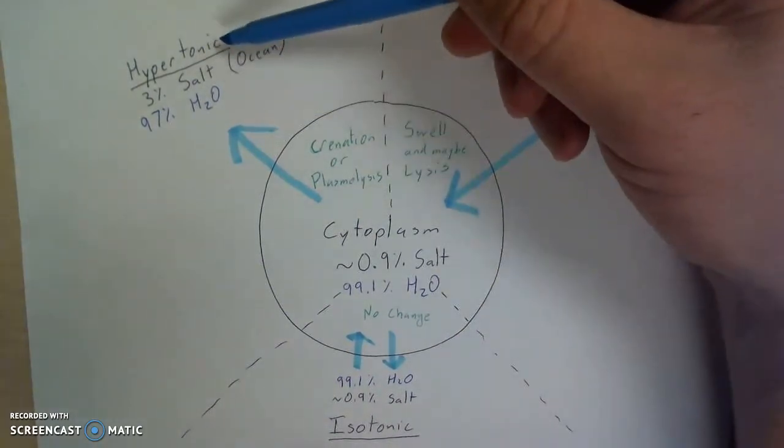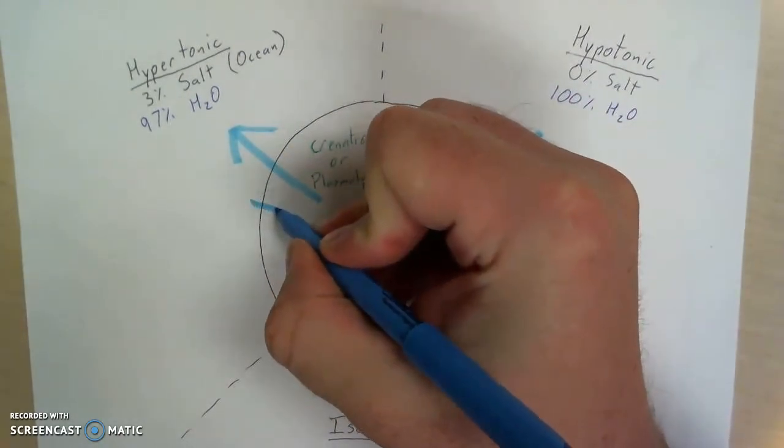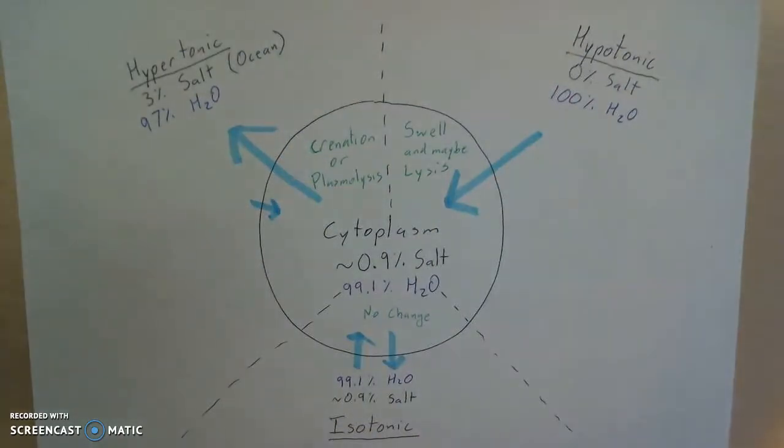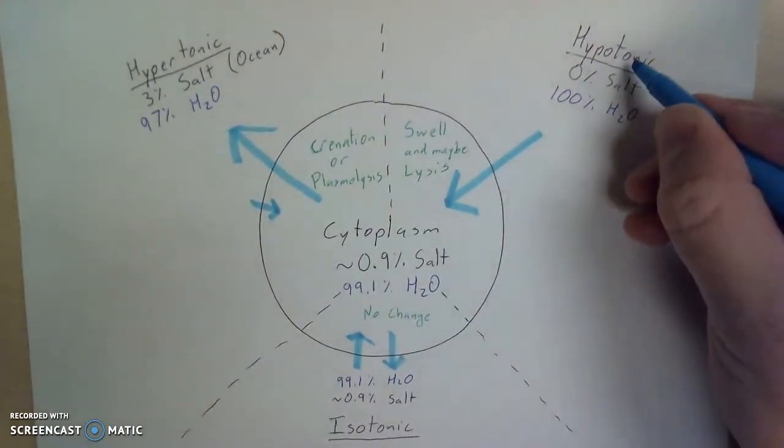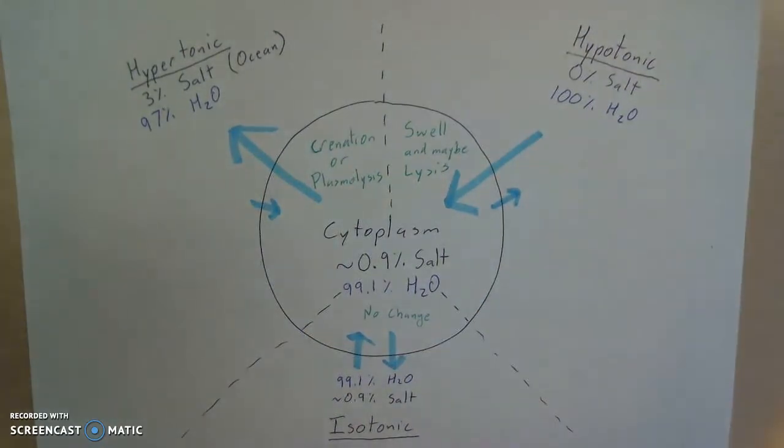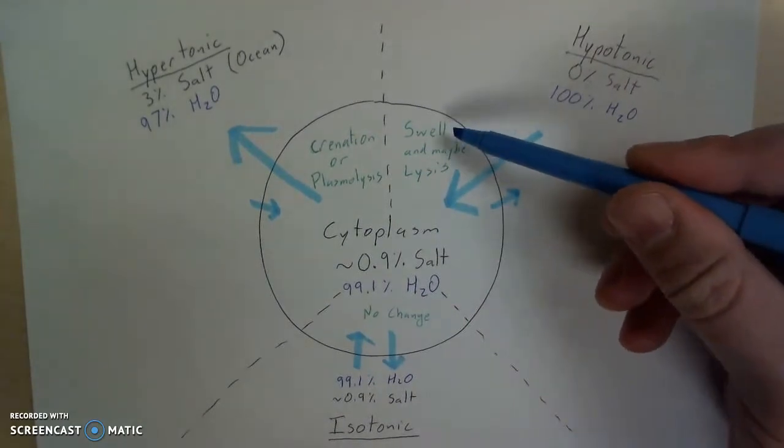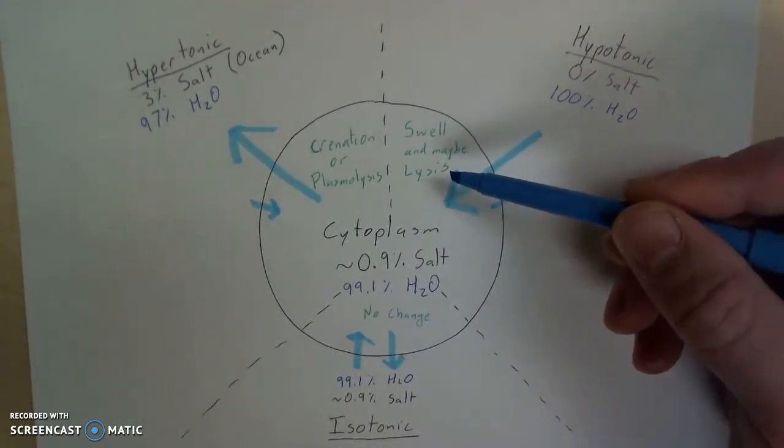So we should actually add that kind of information to our other drawings. So in a hypertonic environment, we said water was going to move out of the cell. Well, some water also moves into the cell, just a lot less. And that's again why over time, a cell in a hypertonic environment will shrink or crenate or undergo plasmolysis. We should add the same information over here. In a hypotonic environment, lots of water moves into the cell. A little water moves out of the cell. That's why over time, the cell will swell and potentially undergo lysis.